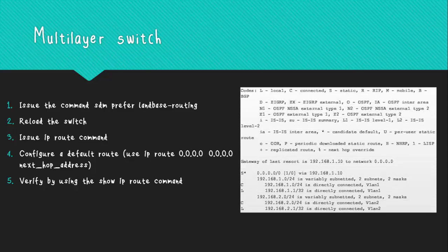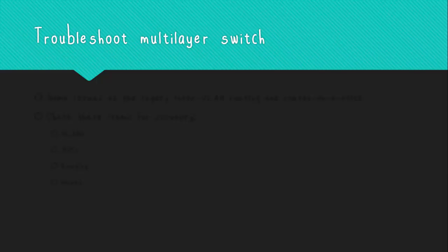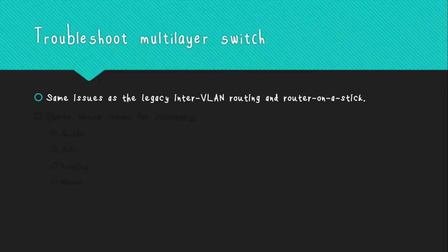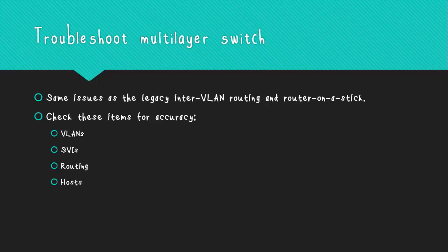The last topic in this chapter is troubleshooting Layer 3 switching. Layer 3 switching has the same issues as legacy InterVLAN routing and router on a stick InterVLAN routing. The following items should be checked for accuracy: VLANs must be defined across all switches, enabled on trunk ports, and ports must be in the right VLANs. SVIs must have the correct IP address and subnet mask, must be up, and must match with the VLAN number. Routing ports must be enabled, and each interface on the network must be added to the routing protocol. Hosts must have the correct IP address and subnet mask, and must have a default gateway associated with an SVI or routed port.